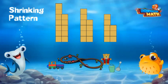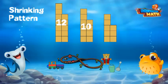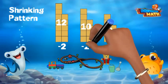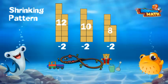What is the rule for this pattern? How many tiles will make up figure four if the pattern continues? What's changed from one figure to the next? In figure one there are 12 squares. In figure two there are 10 squares. In figure three there are eight squares. There are two fewer squares in each figure. So the rule is to subtract two squares.